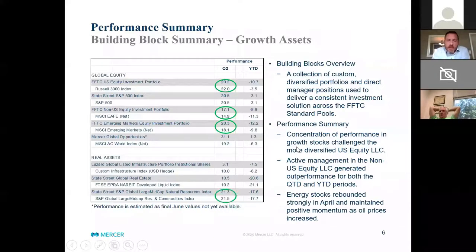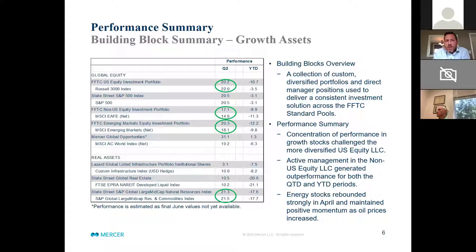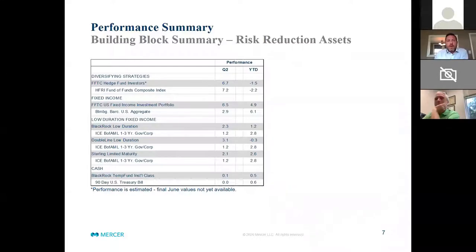One of the areas particularly hard hit during the first quarter was energy stocks, given their dependence on global economic growth and the demand shock that disrupted energy markets, coupled with the increase in supply we saw earlier in March, which left them at a really depressed price at the end of the first quarter. We saw a strong rebound in April and a lot of that positive momentum continued throughout the quarter as oil prices continued to rise. Real estate recovered, and more importantly in the real asset bucket, natural resources were up more than 20 percent.